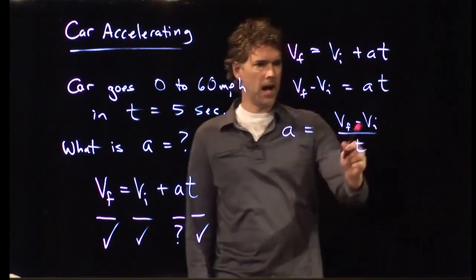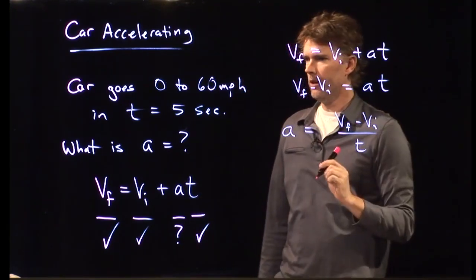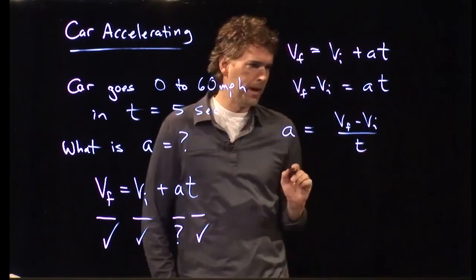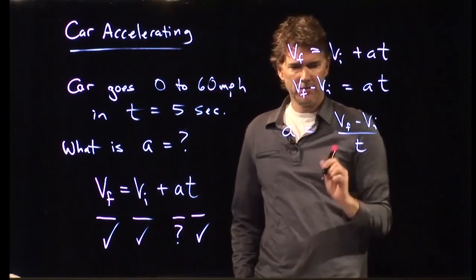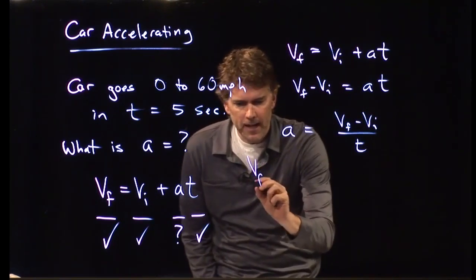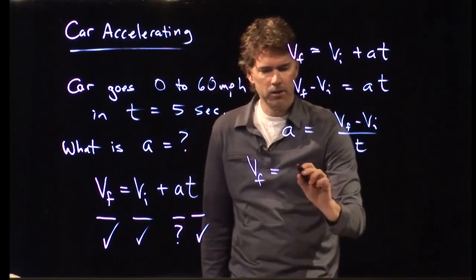Now, we know Vi is going to be 0. That's going to drop out of our equation. Vf is 60 miles per hour. And T is 5 seconds. So, first off, we have to get everything into SI units.